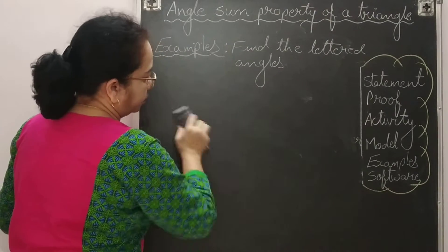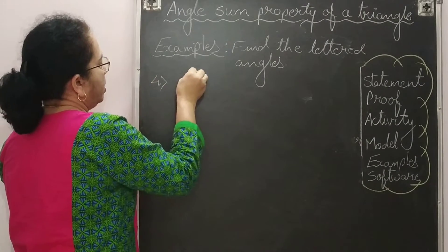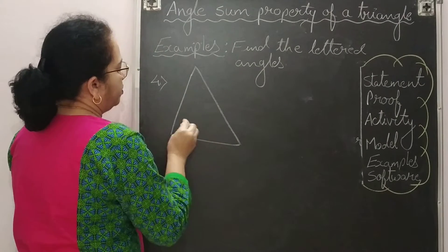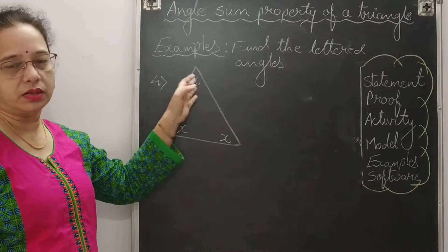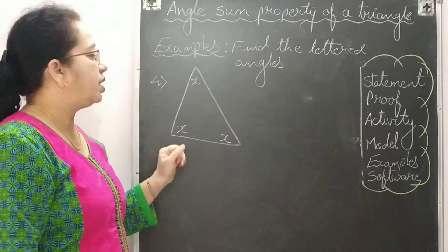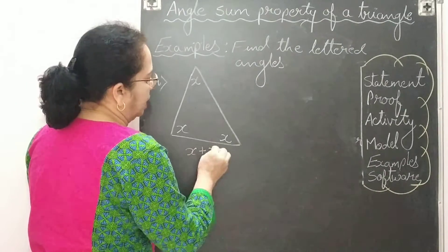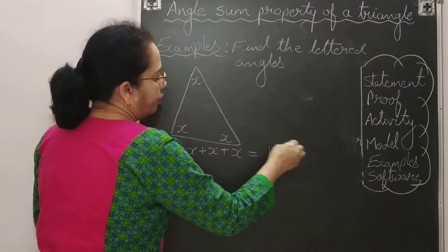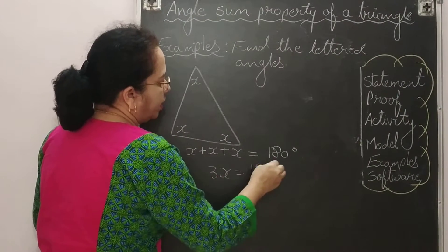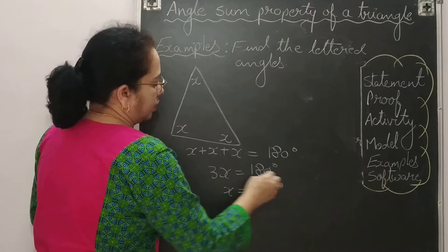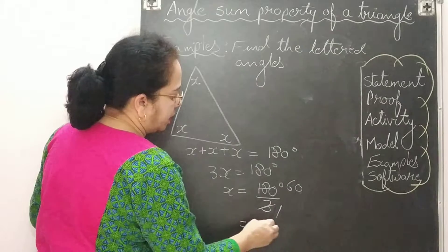Fourth example: an equilateral triangle where all three angles are equal. Since no measurement is given, each angle is X. By angle sum property: X + X + X = 180 degrees, which gives 3X = 180. Using equation concept, divide both sides by 3, and X = 60 degrees. So in an equilateral triangle, each angle measures 60 degrees.